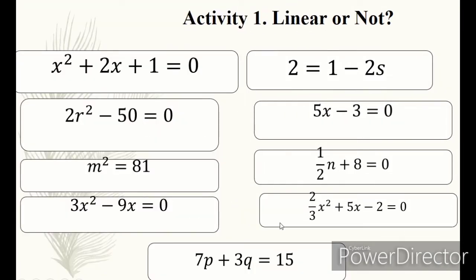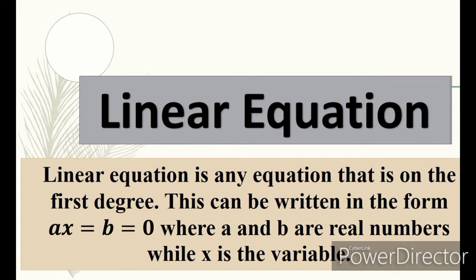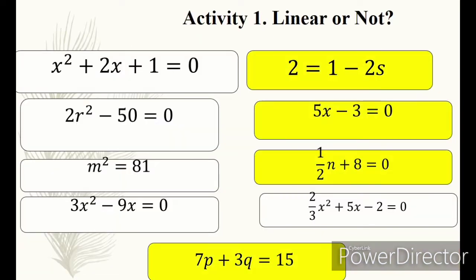Hi there! Are you still answering our activity? Now, let us check which is linear and which is not. The color yellow represents linear equation. Let us check your paper if it is correct. Linear equations are the following: 2 equals 1 minus 2x; 5x minus 3 equals 0; one-half n plus 8 equals 0; 7p plus 3q equals 15. Those are the linear equations, because a linear equation is an equation that is on the first degree.